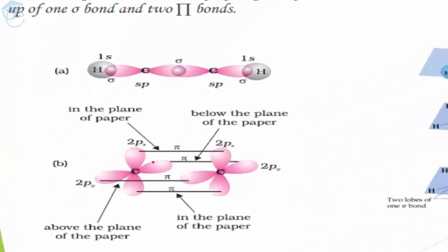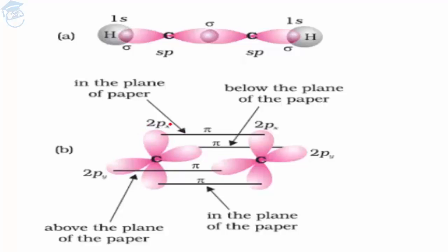Now for the two pi bonds: one p orbital of a carbon atom overlaps sideways with the p orbital of another carbon atom. If one overlap is in the x-plane, the other is in the y-plane — py orbitals overlap to form a pi bond. So there is one sigma bond between the carbon atoms and two perpendicular pi bonds.